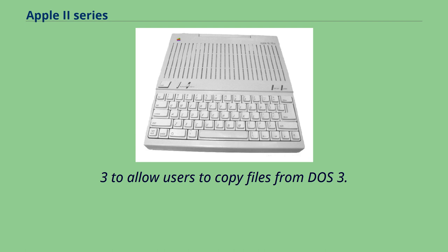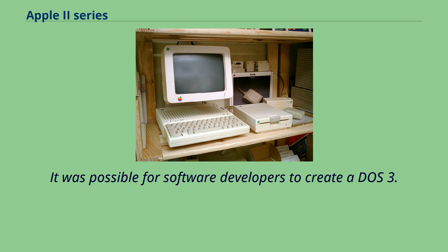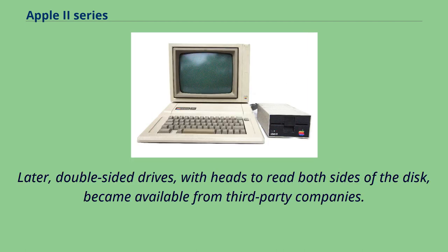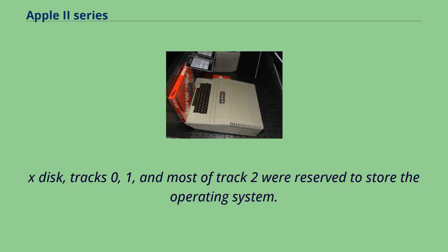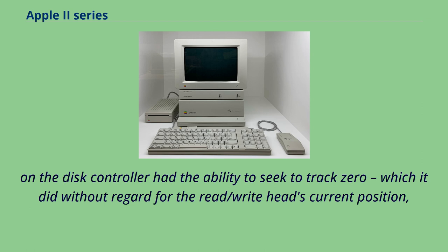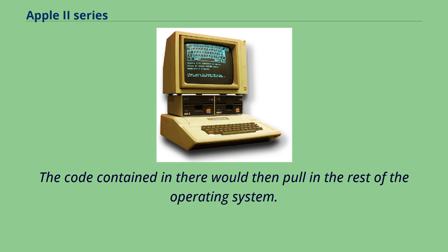Later, double-sided drives with heads to read both sides of the disk became available from third-party companies. On a DOS 3.3 disk, tracks 0, 1, and most of track 2 were reserved to store the operating system. A short ROM program on the disk controller would seek to track 0, resulting in the characteristic chattering sound of a Disk II boot — the read/write head hitting the rubber stop block — and read and execute code from sector 0. DOS stored the disk's directory on track 17, in the middle of the 35-track disk, to reduce average seek time; the directory could hold a maximum of 105 files and subdirectories were not supported.